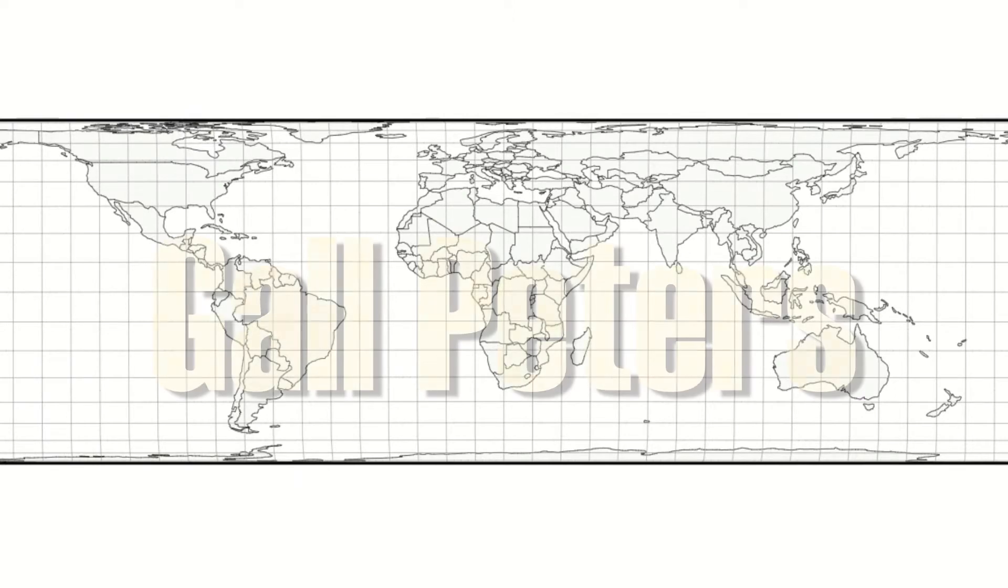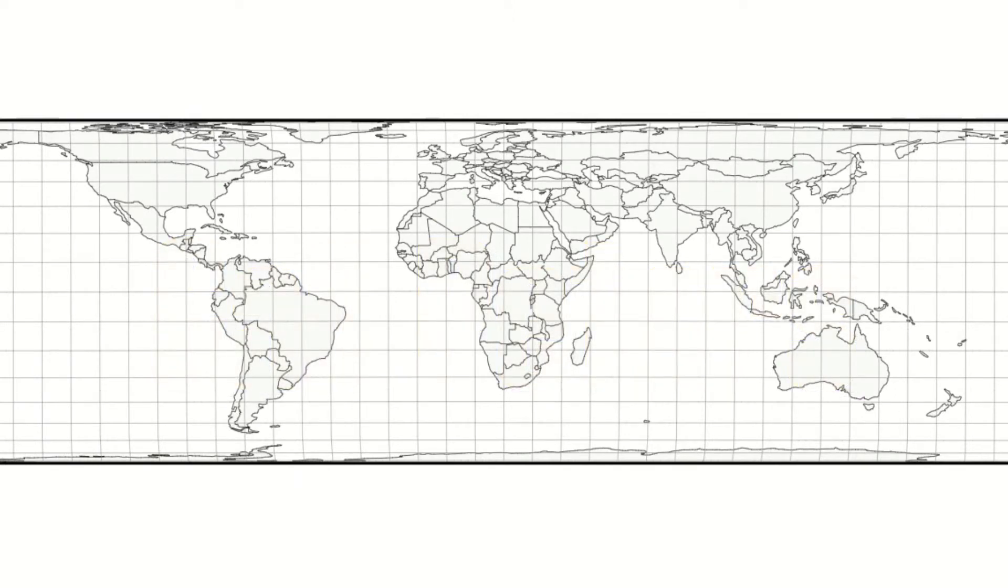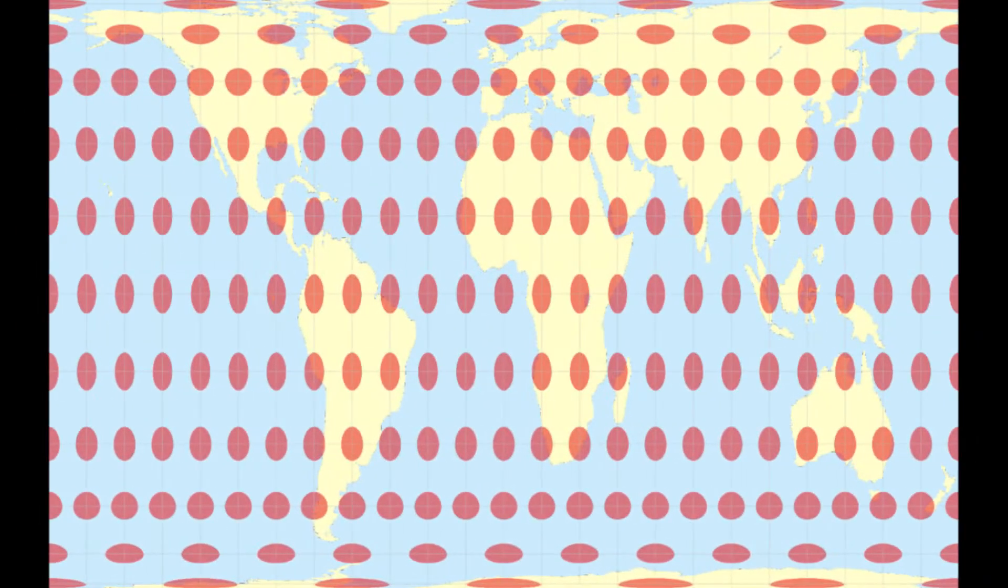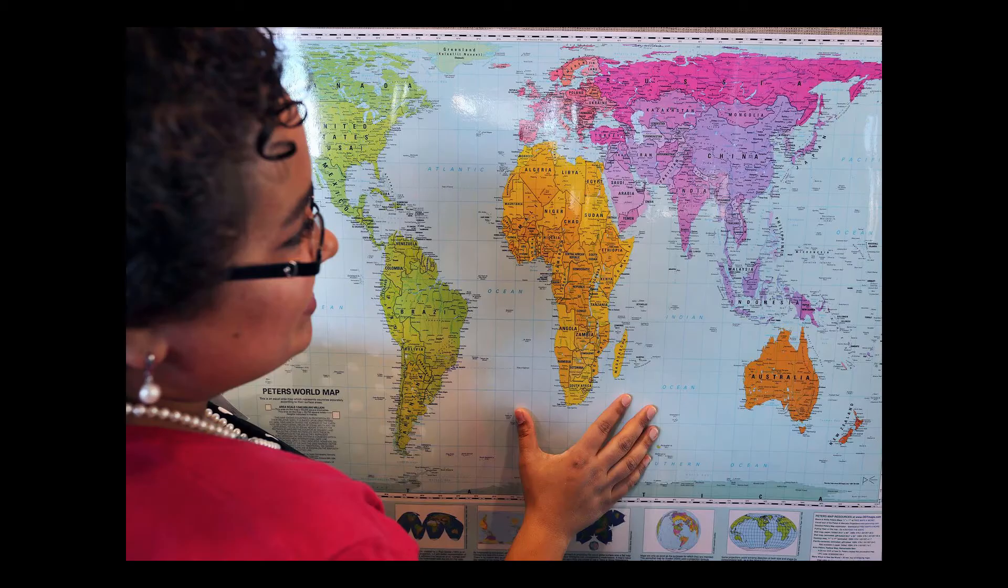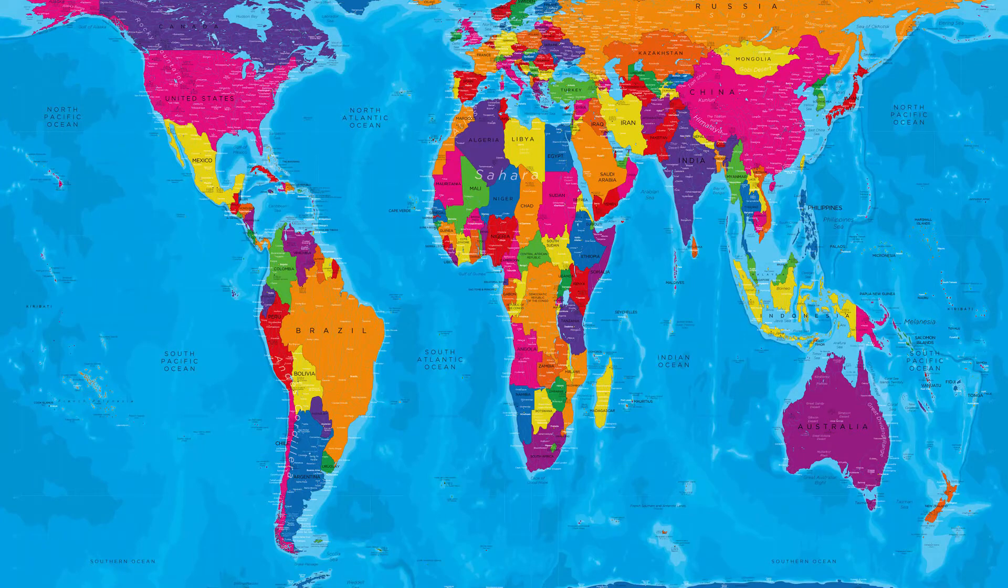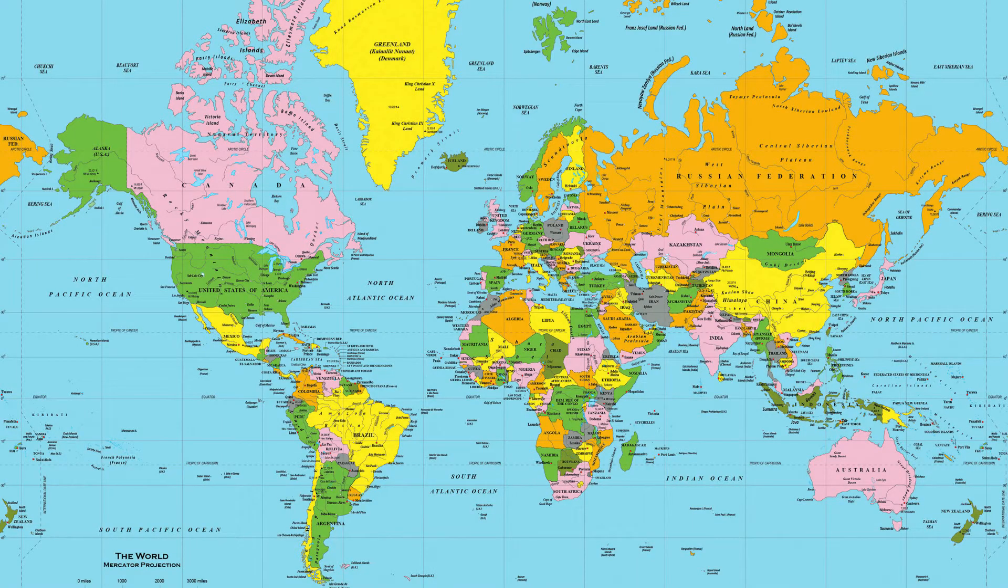Then you have the Gall-Peters projection, which a lot of people have been defending as well. Why? Simply because the size of countries is correct in every single latitude, even if the shape is completely distorted. This map projection has been implemented in several places, and some argue that this is the ideal one simply because the Mercator only benefits the most powerful countries.